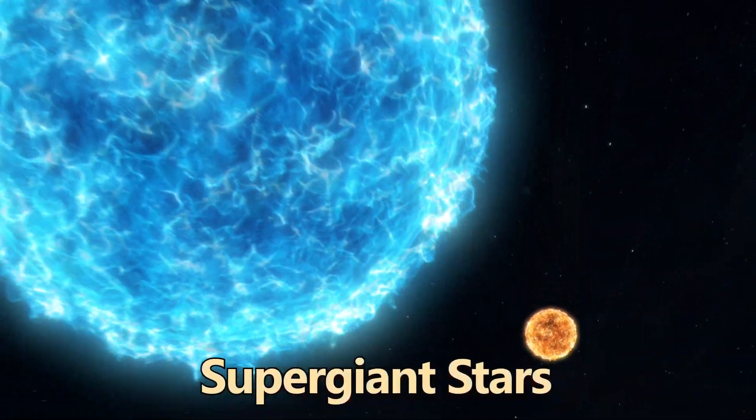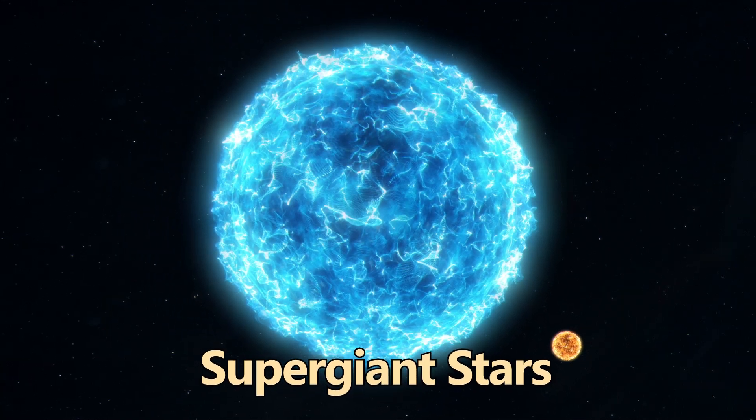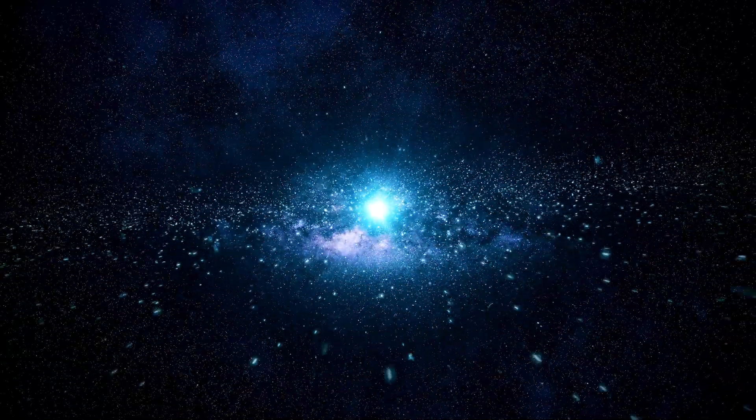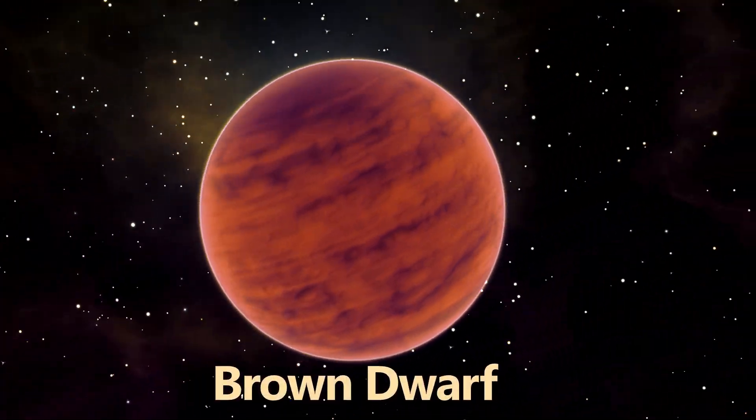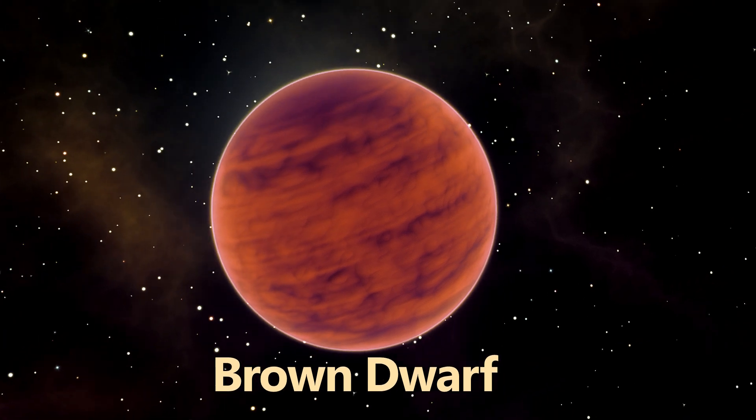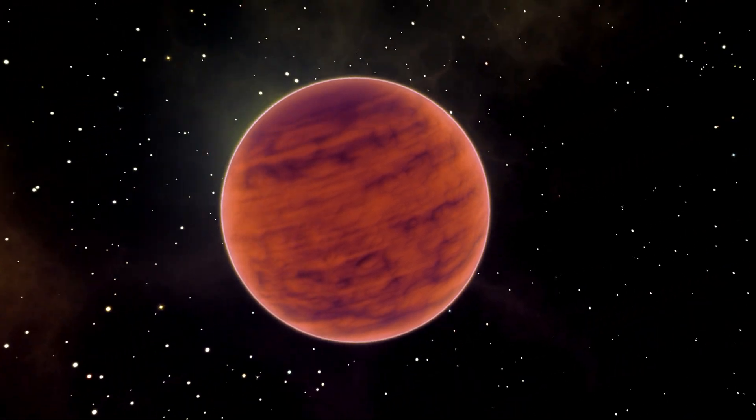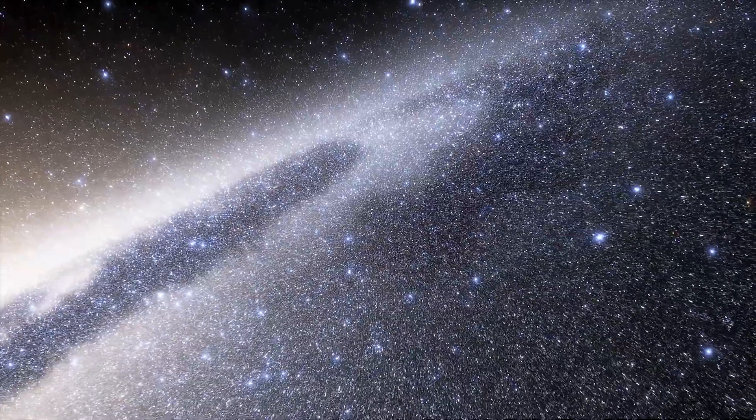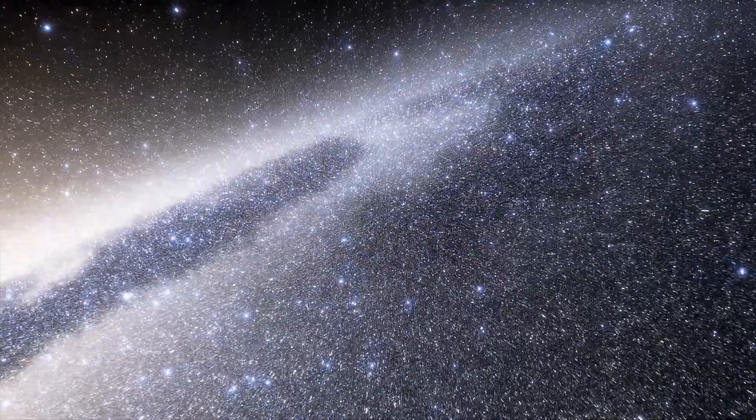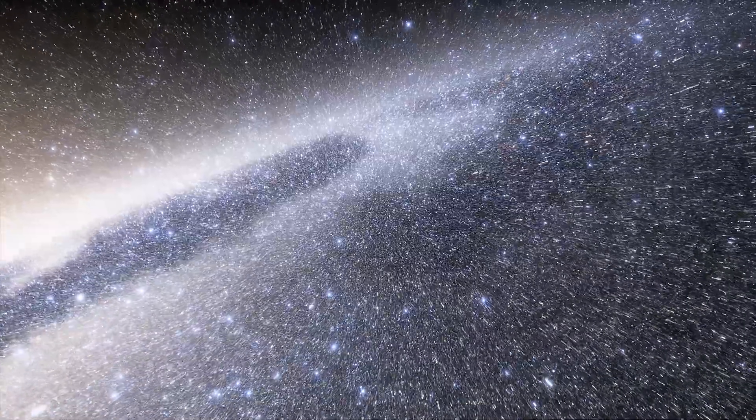Supergiants, among the largest and brightest stars, end their lives in spectacular supernova explosions. Brown dwarfs, often called failed stars, lack the mass to sustain hydrogen fusion. These various types of stars, each with unique characteristics and life cycles, contribute to the rich and diverse tapestry of the Milky Way.